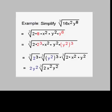In this example, I'm going to simplify a cube root. We have the cube root of 16x squared y to the eighth. The trick here is to rewrite that radicand — the part inside the radical sign — as products of perfect cubes times other factors.